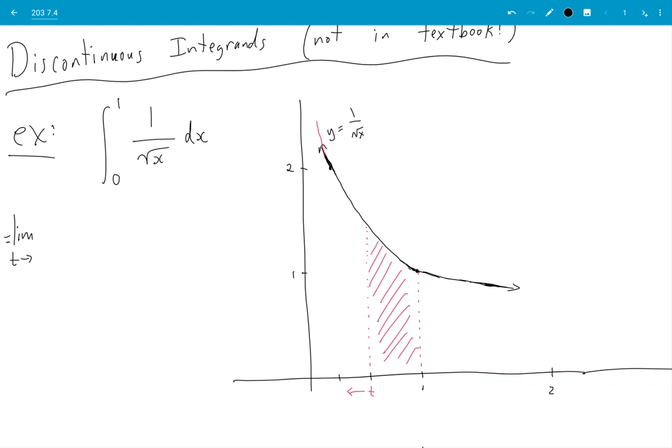And then t goes to 0 from the right, 0 plus. And t and 1. We get x to the minus 1 half. This is our integrand. And then that is 2x to the 1 half.